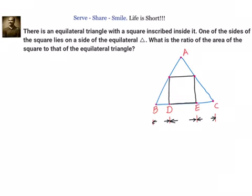What we understand from an equilateral triangle is that all the angles are equal to 60 degrees. That is a good starting point, because once we know that, we can use a little bit of trigonometry and it becomes very easy to solve this. Suppose that x is the side of the square — since it is a square, all sides are equal to x.